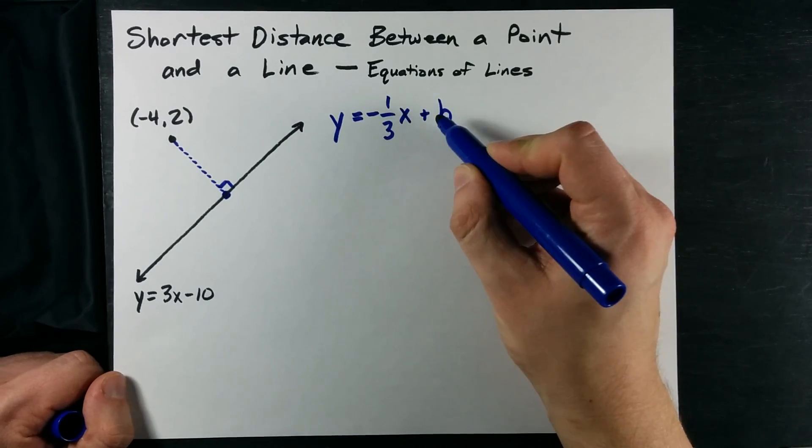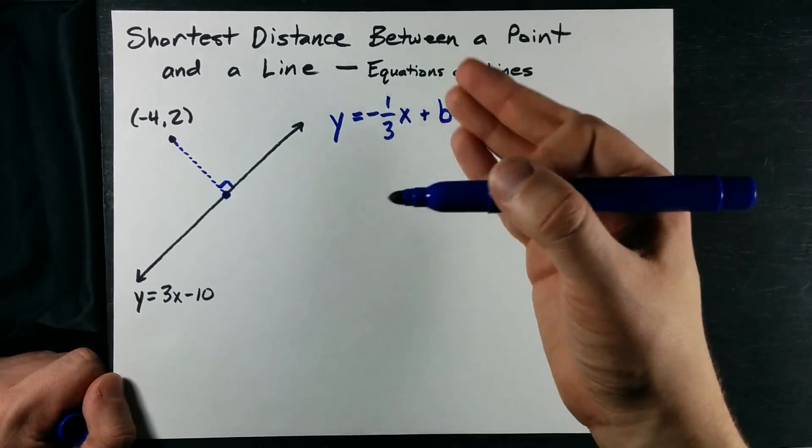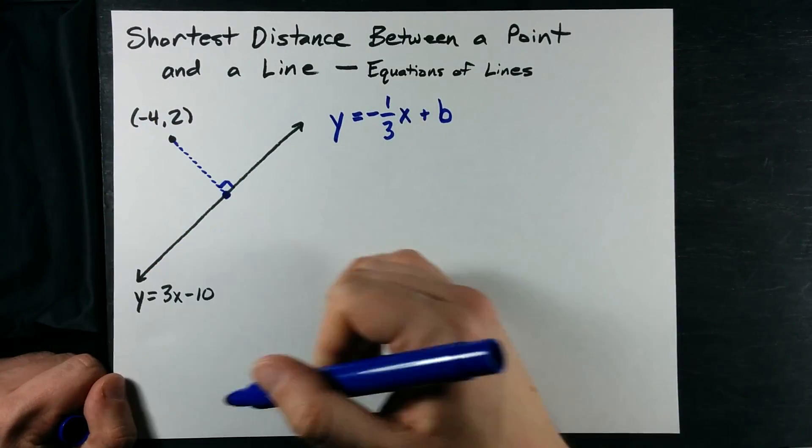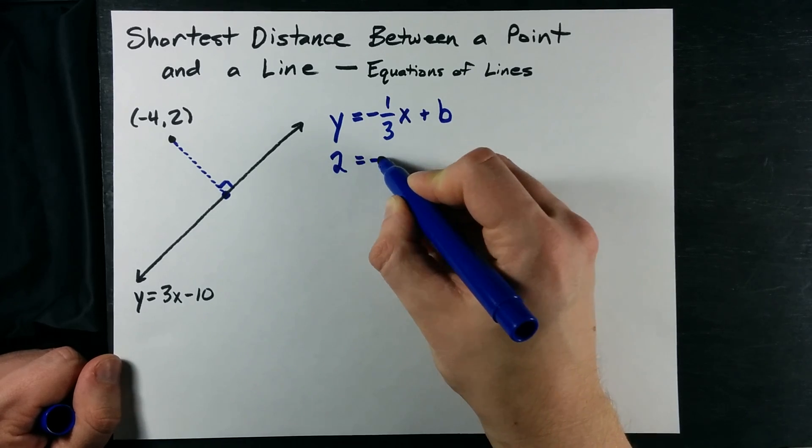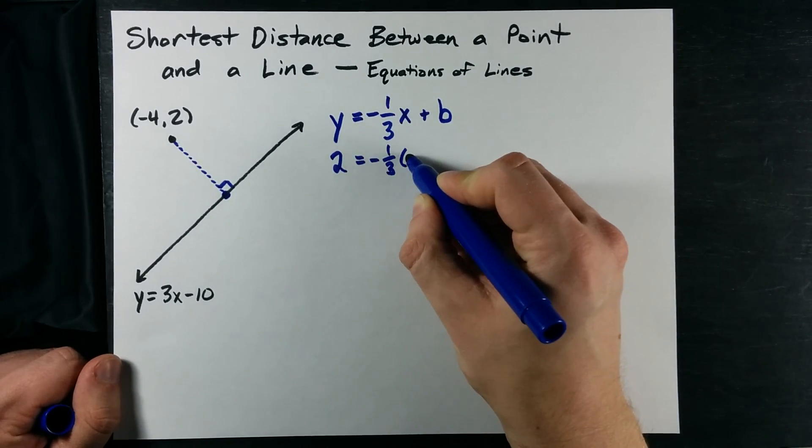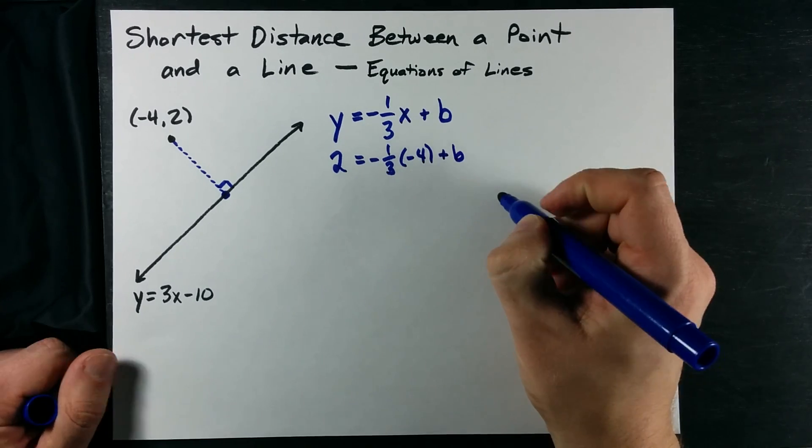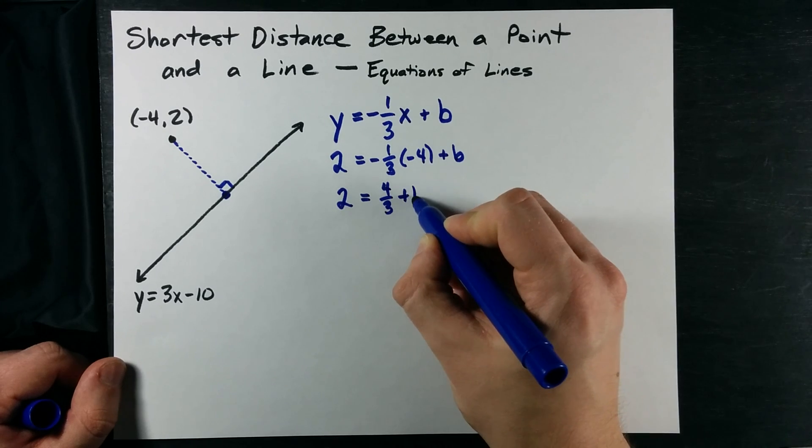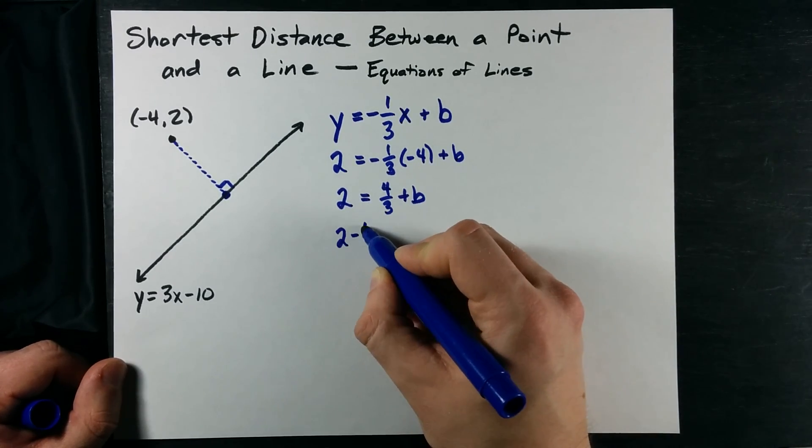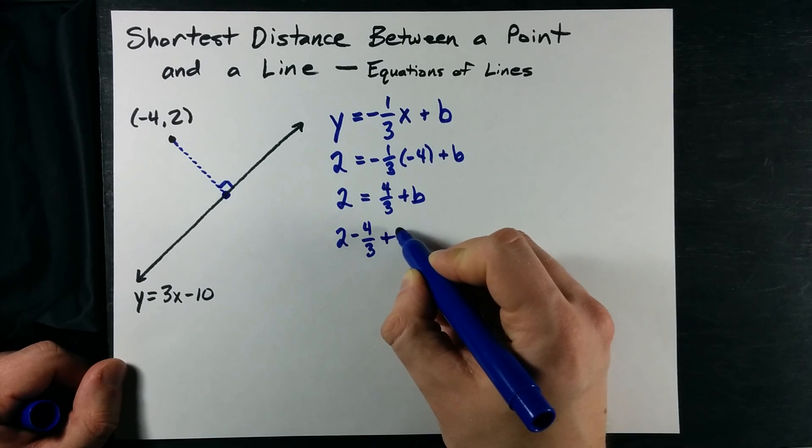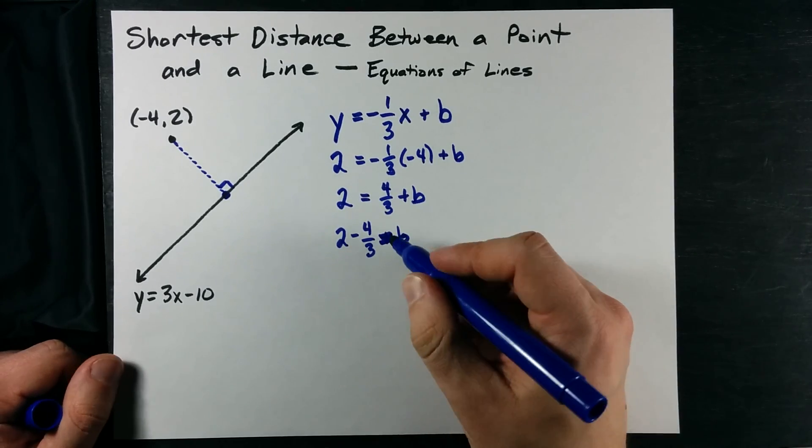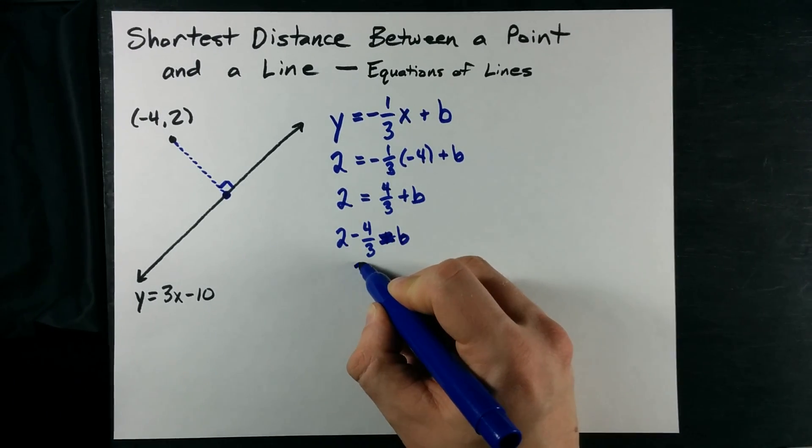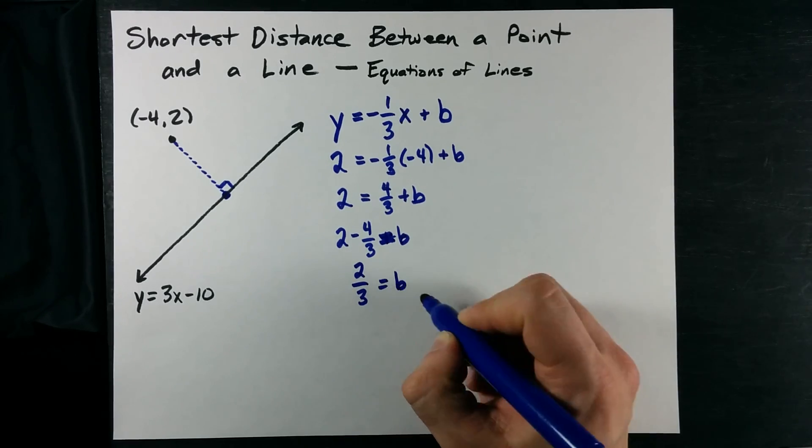Now, to solve for b, which you need if you want the equation of the line, you have to plug in a point that you know is on the line. That's where the coordinates you're given come in. That's negative 1 third of negative 4 plus b. Let's solve this. We've got 2 equals 4 thirds plus b. I'm going to move the 4 thirds to the other side. And I don't know how you are with fractions. Worst comes to worst, you use your calculator. You're going to end up with b is 2 thirds.